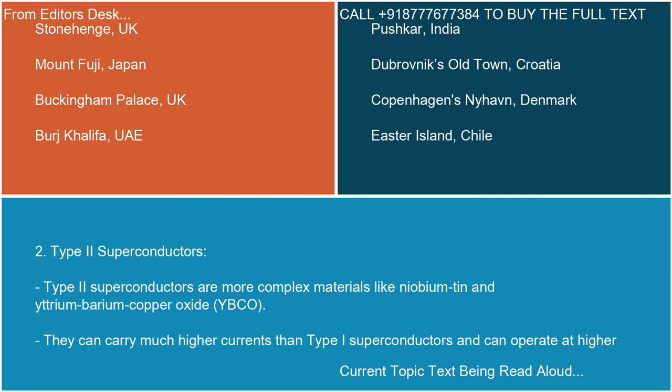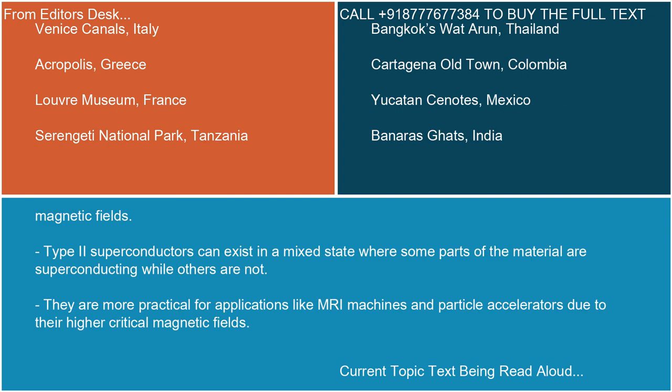Type II superconductors are more complex materials like niobium tin and yttrium barium copper oxide (YBCO). They can carry much higher currents than type I superconductors and can operate at higher magnetic fields. Type II superconductors can exist in a mixed state where some parts of the material are superconducting while others are not. They are more practical for applications like MRI machines and particle accelerators due to their higher critical magnetic fields.